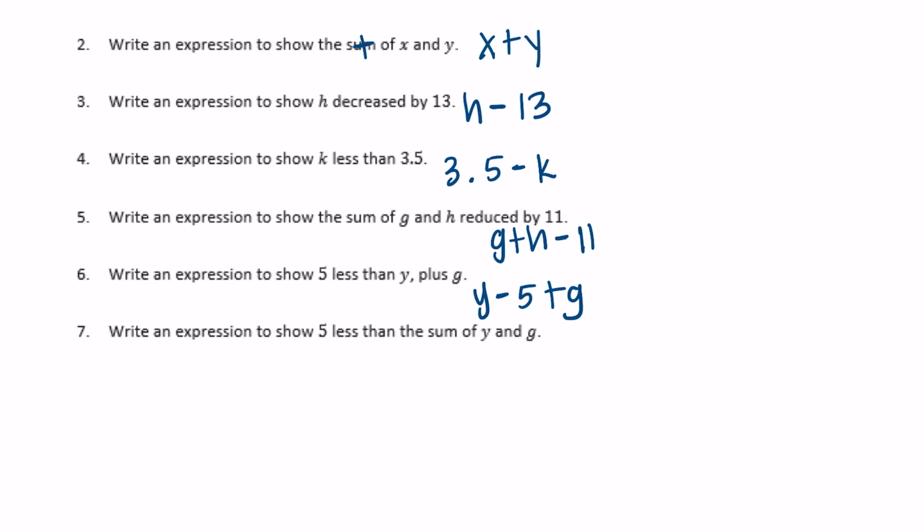And then number 7: write an expression to show 5 less than the sum of y and g. Now we want the sum of y and g first, but we want 5 less than that, so subtract 5: y plus g minus 5. Or you could flip it around and have g plus y minus 5.